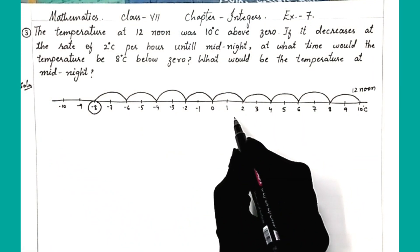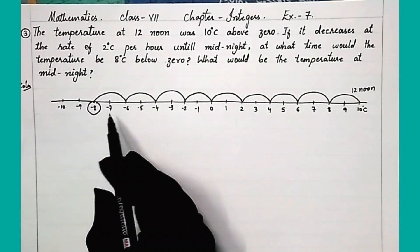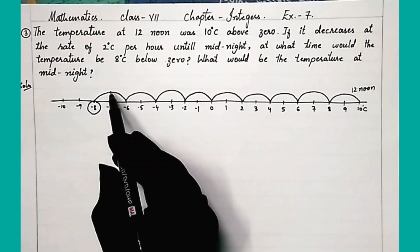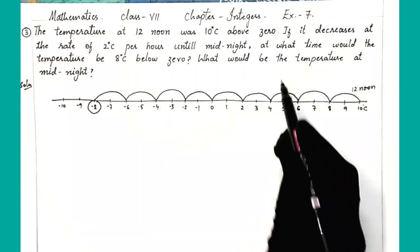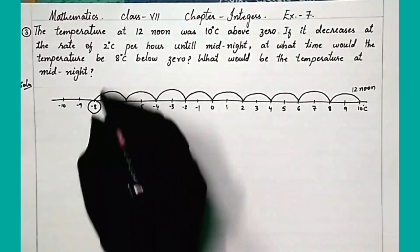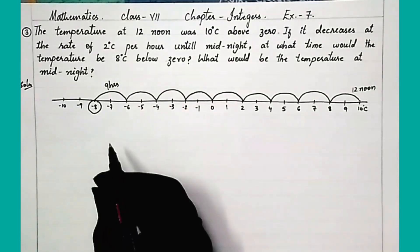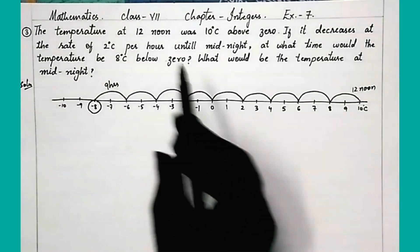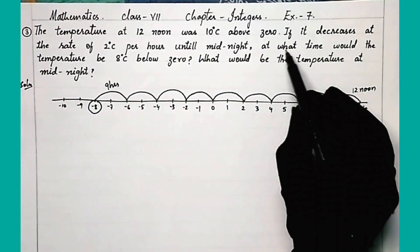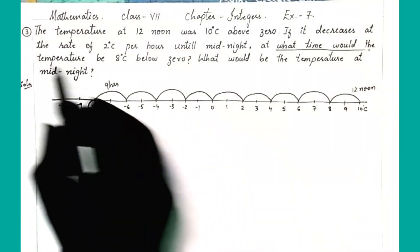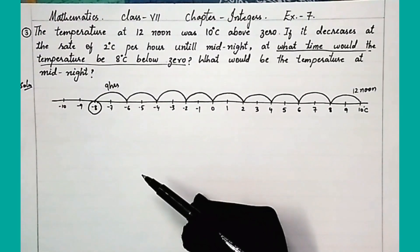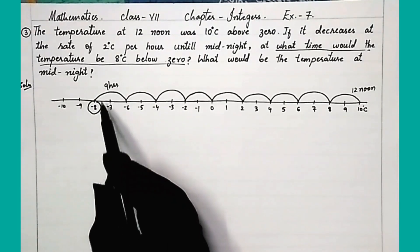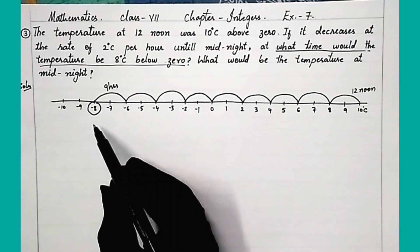At the 9th hour it will be minus 8 degrees Celsius. So after 9 hours the temperature reaches minus 8 degrees Celsius. We got the solution for the first part of the question: after 9 hours from 12 noon, the temperature will reach minus 8 degrees Celsius.